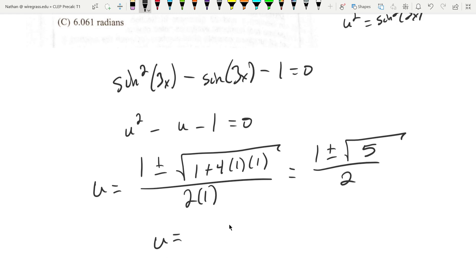So we get 1 plus or minus the square root of 5 over 2. Typing this into a calculator, we get 1 plus the square root of 5, divided by 2, which gives me approximately 1.618. The other answer is 1 minus the square root of 5, divided by 2, which gives me approximately negative 0.618.